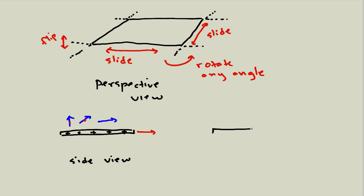What if the electric field pointed in the same direction at each spot — say, all pointing up by the same amount? That satisfies the sliding symmetry, but it violates another: if I rotate the plane within itself, I can make those vectors point a different direction. So I can rule that out too.